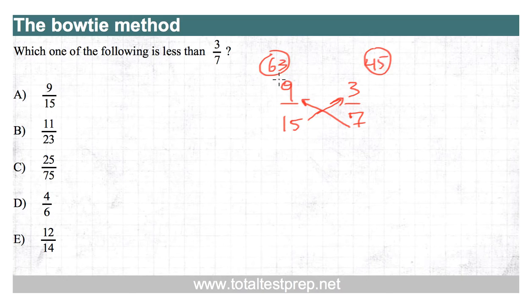63 is bigger than 45, which means that the fraction under the 63 is bigger than the fraction under the 45. So nine-fifteenths is bigger than three-sevenths. This is just a quick way of comparing fractions.